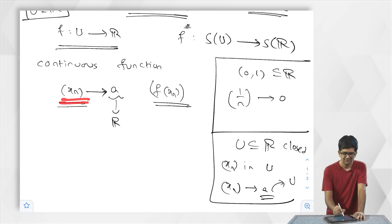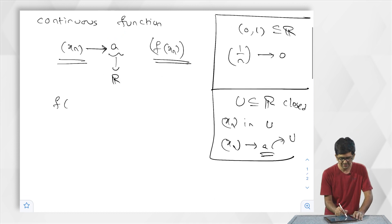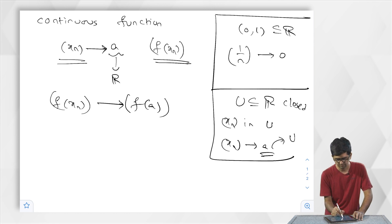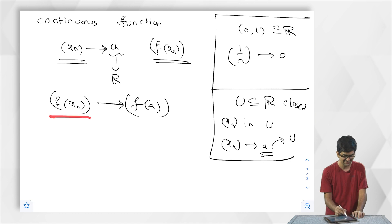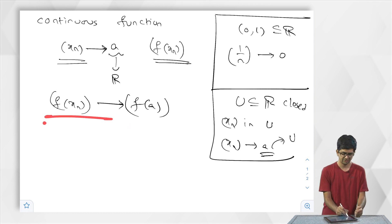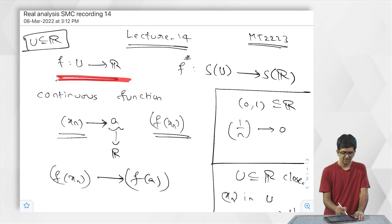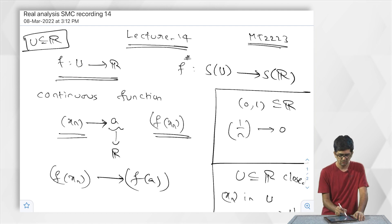Since x_n is Cauchy it converges to some a in R, and since U is closed, a must be inside U. So we have a sequence in U converging to an element in U. Now we can apply the continuity of f: the image sequence f(x_n) also converges to f(a). Since every convergent sequence is Cauchy, f(x_n) is a Cauchy sequence. So a continuous function on a closed domain preserves Cauchy sequences.